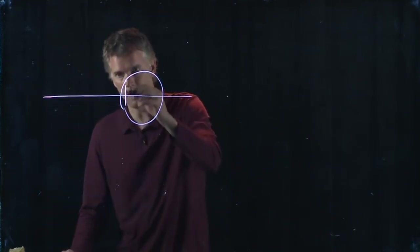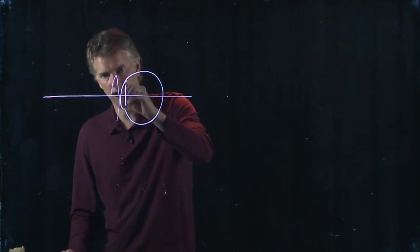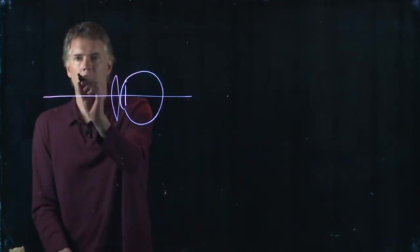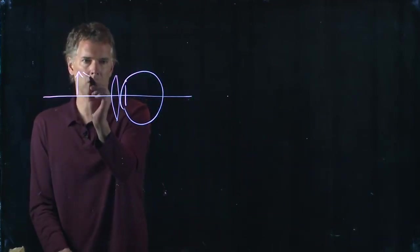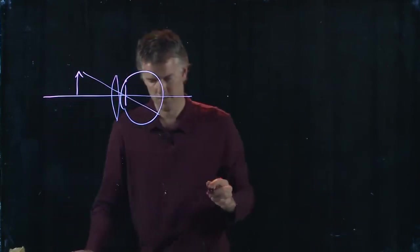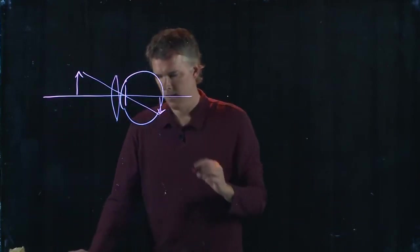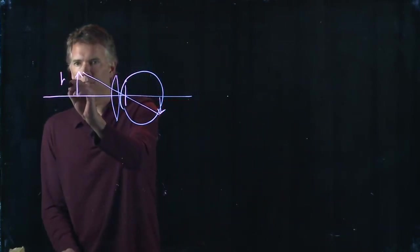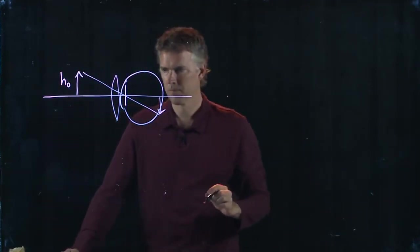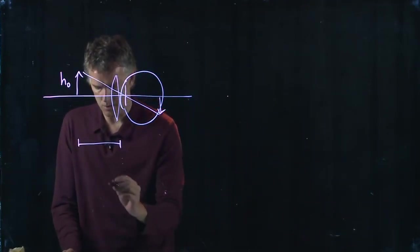So we're going to add a magnifying glass right in front and now the object can be a lot closer. The object height is still the same, of course, but d_o got smaller.